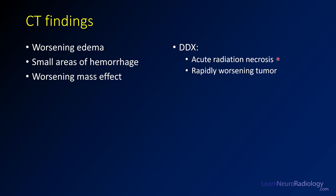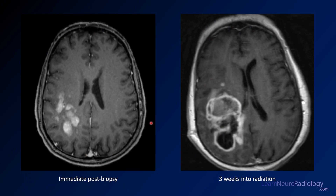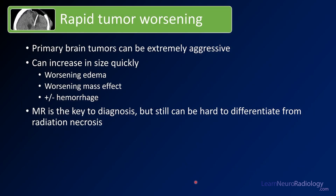The differential for this is acute radiation necrosis or rapidly worsening tumor — you can't tell the difference on CT. When you make your CT impression, you want to say there's significantly worsening edema and mass effect in the known tumor bed, either rapid tumor worsening or radiation necrosis. They may go on to get an MRI, but they should be aware of these acute findings. On the post-contrast imaging, the immediate post-biopsy showed some nodular enhancement; three weeks into radiation it's substantially worse — a lot more mass effect, more enhancement, some areas of necrosis. This patient was transferred to hospice, described as rapid tumor worsening. These tumors are extremely aggressive and can increase in size rapidly. MRI is key, but describing the mass effect, hemorrhage, and worsening of those findings helps guide management.